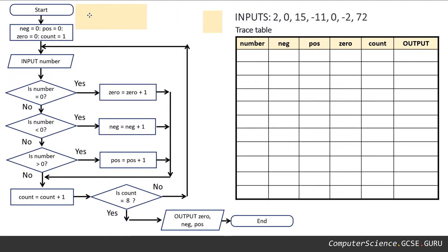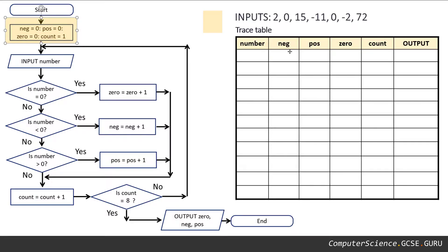So let's look at our flowchart. We have our start symbol and then we get to our first process — we've got our neg variable that needs to be set to zero.